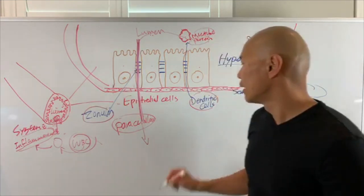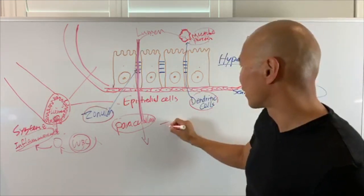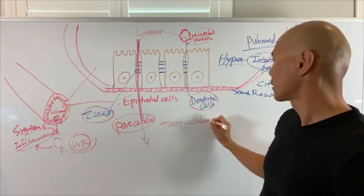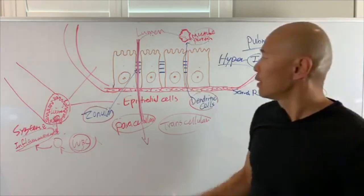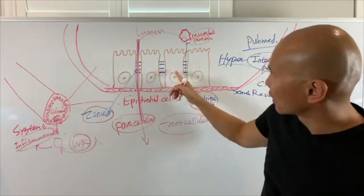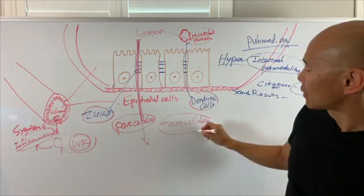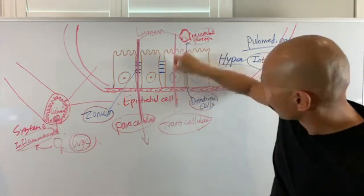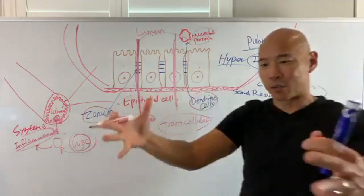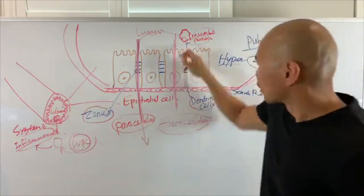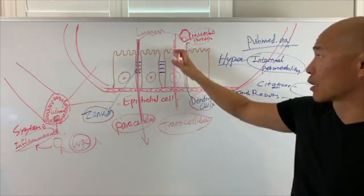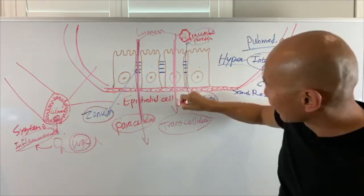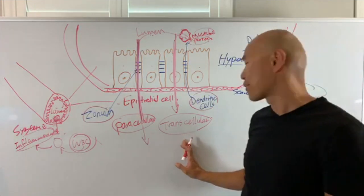The second way you can have leaky gut is called transcellular — through the cell. The paracellular type is between cells through the tight junctions, but transcellular is when you have damage straight through the cell itself. It just busts right open down the middle — the cell is completely broken and you have proteins and microbes leaking out. That's called a transcellular pathway.